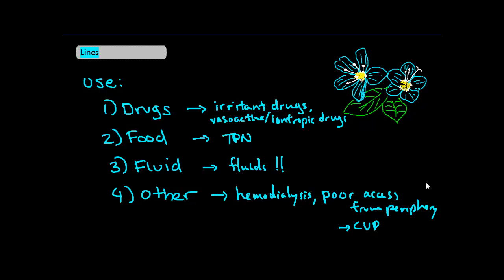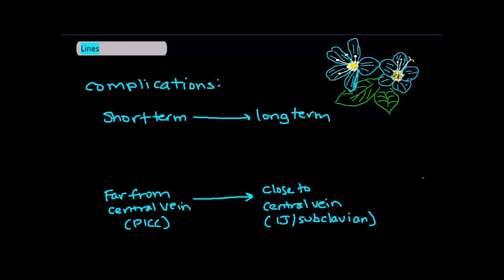Now let's talk about the complications related to central lines. We can think about these in terms of short-term and long-term consequences. So short-term, which relate to placement, include bleeding, pneumothorax through injury of surrounding structures, or embolism, thromboembolism, gas embolism.